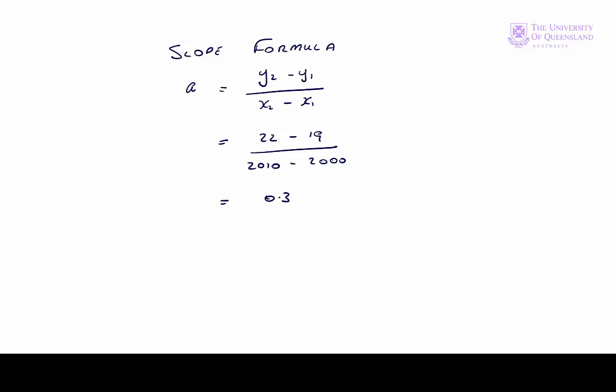Our point-slope formula. We substitute the values for y1 and x1 and a that we've calculated. We rearrange that and we get our linear function for population growth.